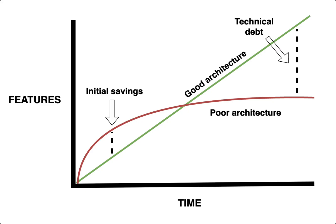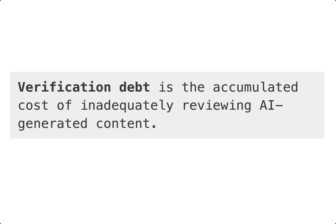Like with technical debt, verification debt can accumulate a sort of compound interest over time as unverified AI outputs become relied upon, copied, and reused in downstream workflows, resulting in a sort of trust cascade where future outputs are then built on a shaky foundation. This unverified content can propagate errors, mislead decision-making, and create a compounding burden on future reviewers, auditors, or stakeholders who must detect and correct mistakes after they've already caused downstream impact.